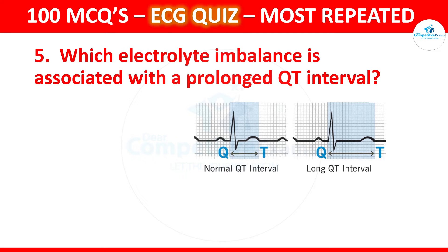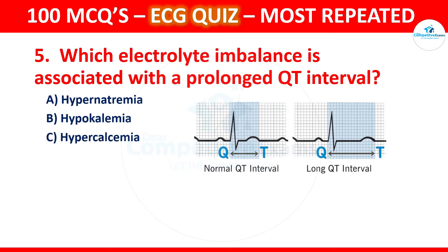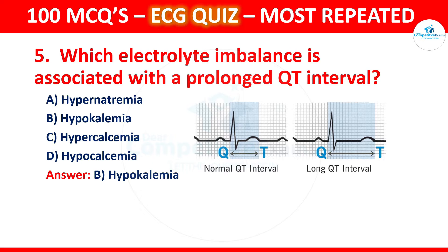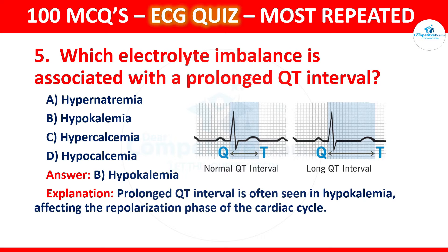Question 5: Which electrolyte imbalance is associated with a prolonged QT interval? Options are hypernatremia, hypokalemia, hypercalcemia, or hypocalcemia. The correct answer is hypocalcemia. A prolonged QT interval is often seen in hypocalcemia, affecting the repolarization phase of the cardiac cycle.